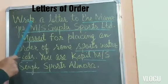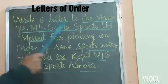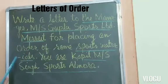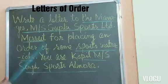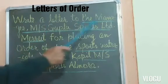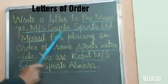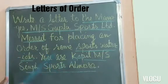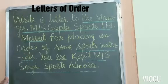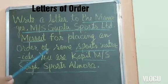Here is a question on a letter of order: Write a letter to the manager, MS Gupta Sports Limited, Murad, for placing an order for some sports materials. You are Kapil, MS Singh Sports, Almora. I have underlined some words. The sender's address is MS Singh Sports, Almora. The receiver's address is the manager, MS Gupta Sports Limited. And the subject is sports materials.